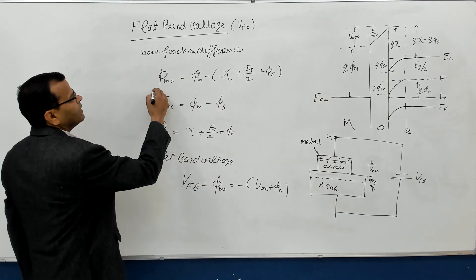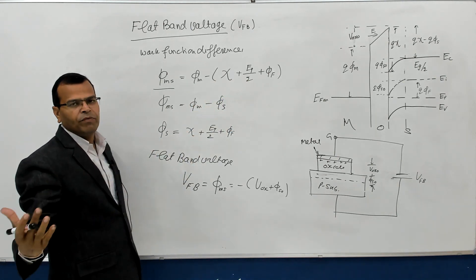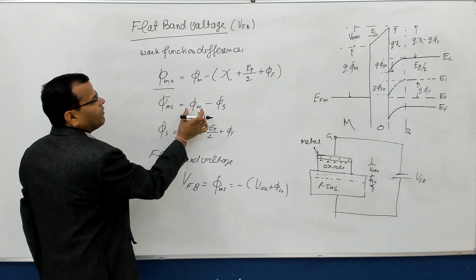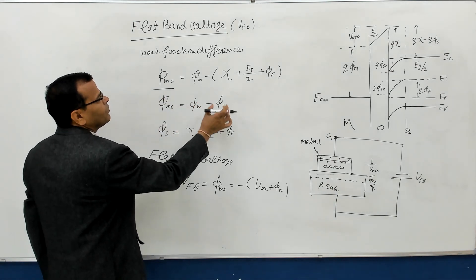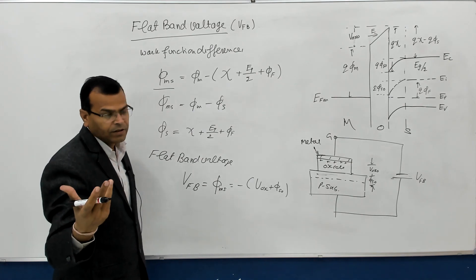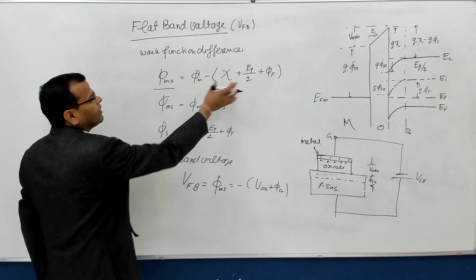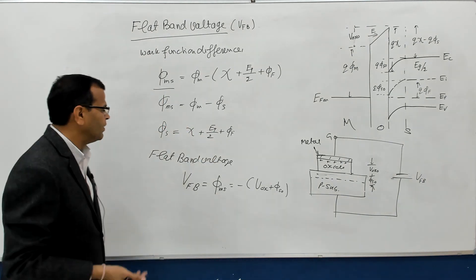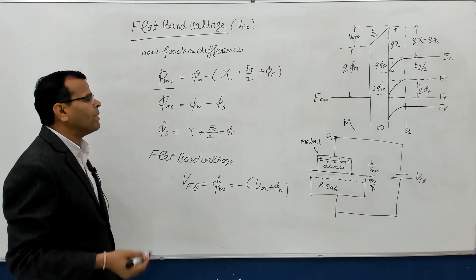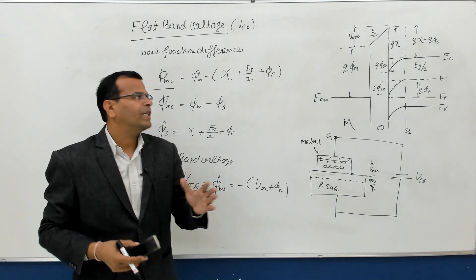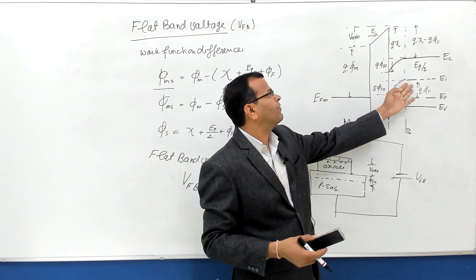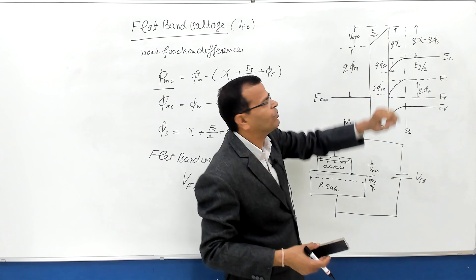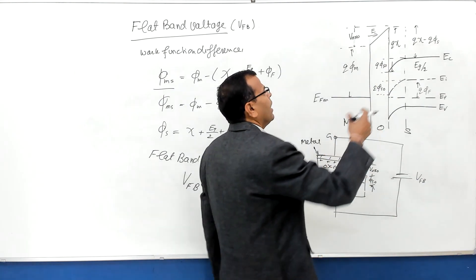That work function difference is given by a specific relationship — you can refer to my previous video for that. The work function of the semiconductor is defined at steady state. So the flat band voltage is nothing but the voltage required to make these bands flat, and that voltage equals this voltage plus this voltage — that is equal to the work function difference φMS.